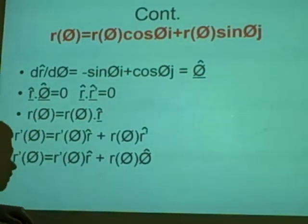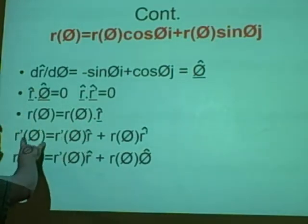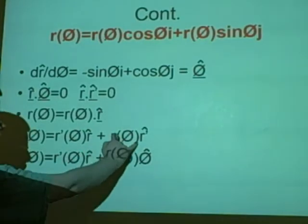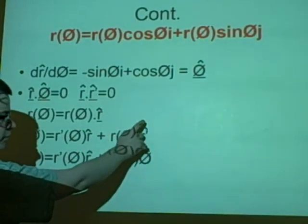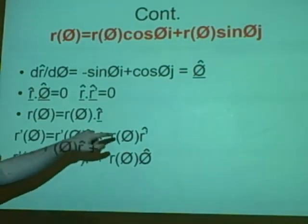If we were to differentiate that, we can use the product rule which gives us r prime of theta equals r prime of theta r hat plus r of theta r prime hat. And then as we know here, we can tell that because of this.